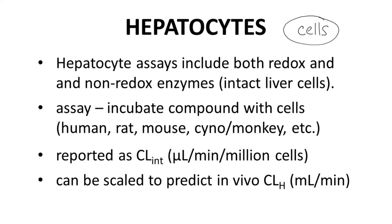The hepatocyte assay is somewhat more complicated because it involves intact cells. Many drugs mostly undergo clearance through the redox enzymes, so microsomal assays are often adequate for predicting in vivo clearance. Like microsomal assays, hepatocyte assays also determine a molecule's intrinsic clearance, though the units are different: microliters of incubation medium cleared per minute per million hepatocytes.